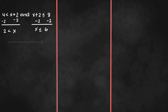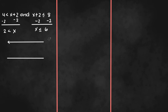Now we can graph both inequalities on a number line. The first one is 2 is less than x, or x is greater than 2. Since it's only less than, you have an open circle, and x is greater than 2.